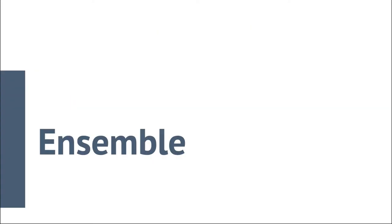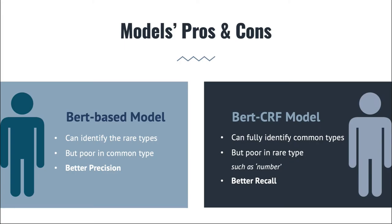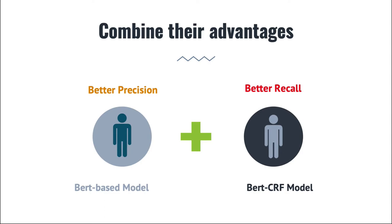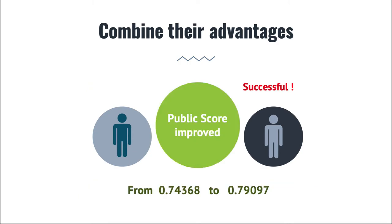Next, we'll talk about the ensemble part. The BERT-based model can identify rare types but is poor on common types, while the BERT-CRF model can fully identify common types but is poor on rare types. In terms of performance, the BERT-based model has better precision while the BERT-CRF model has better recall. Hence, we decided to adopt an ensemble method combining the advantages of both. After ensembling, our F1 score improved from 0.74 to 0.78, showing that ensembling is a successful strategy.